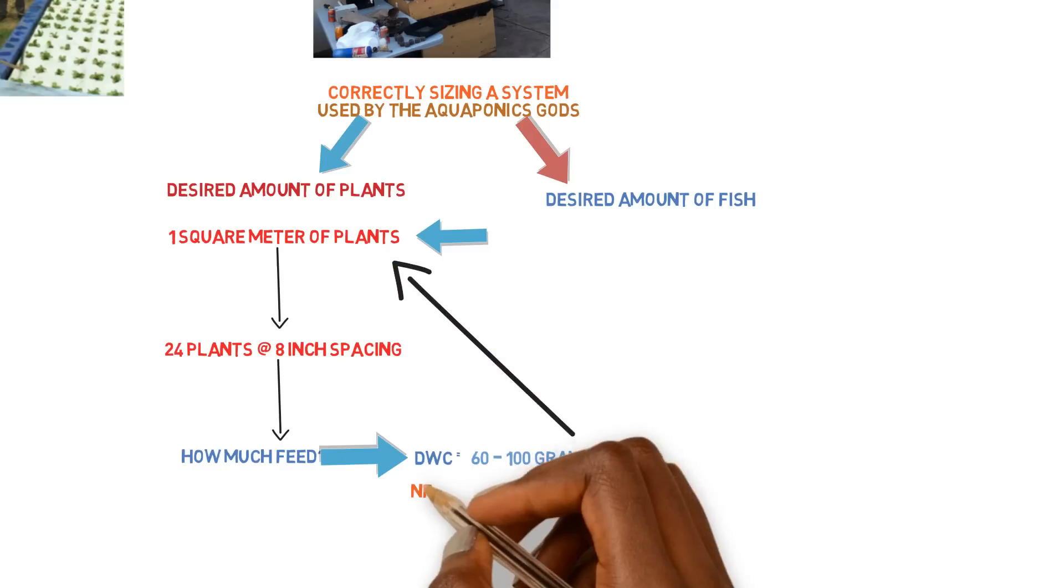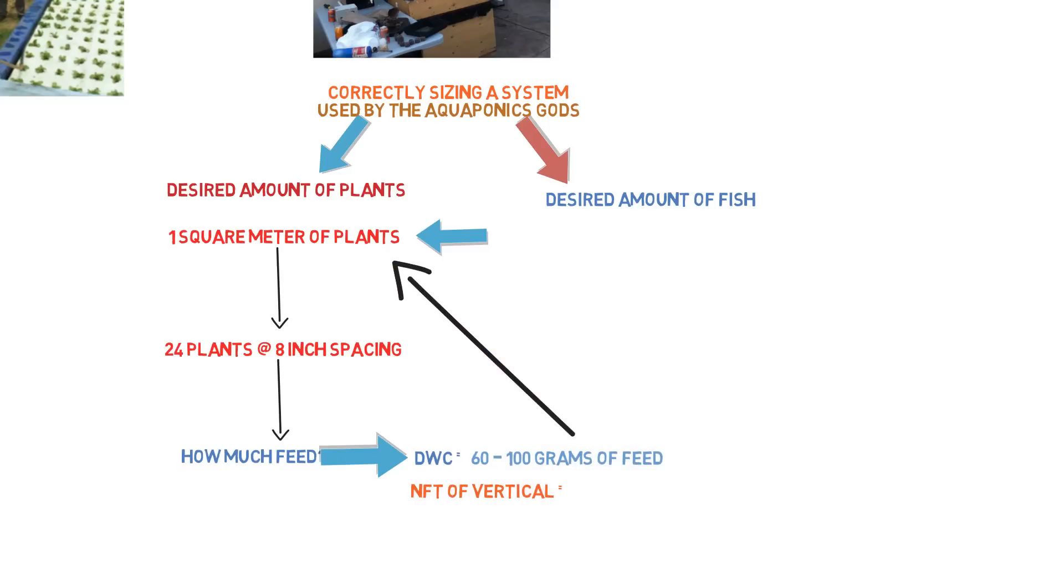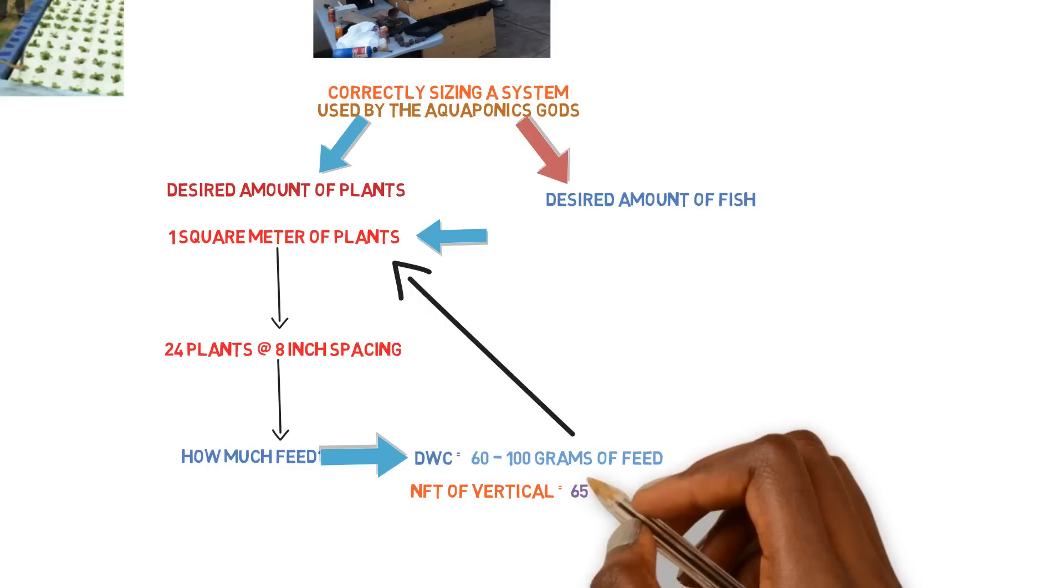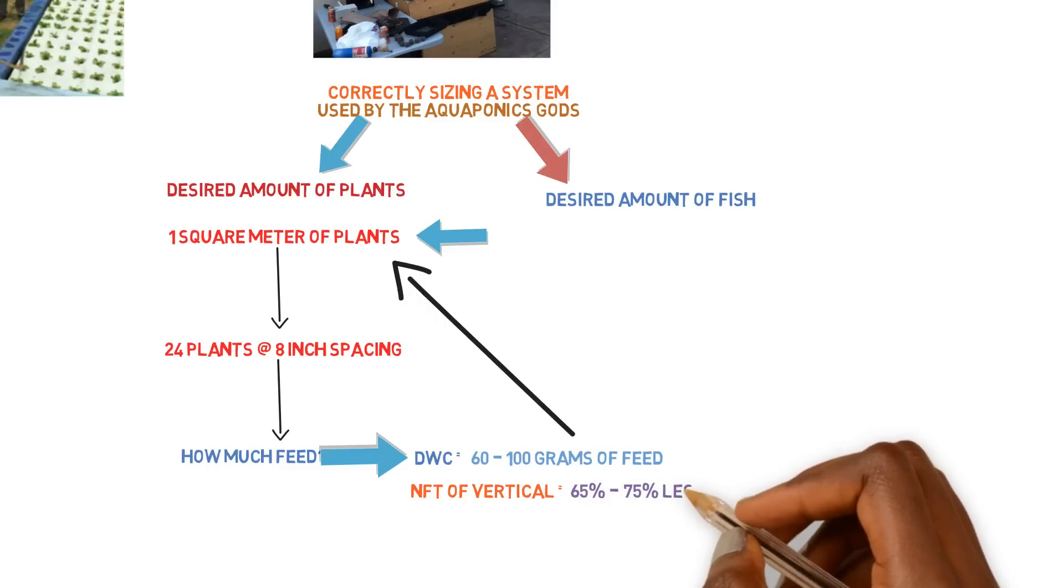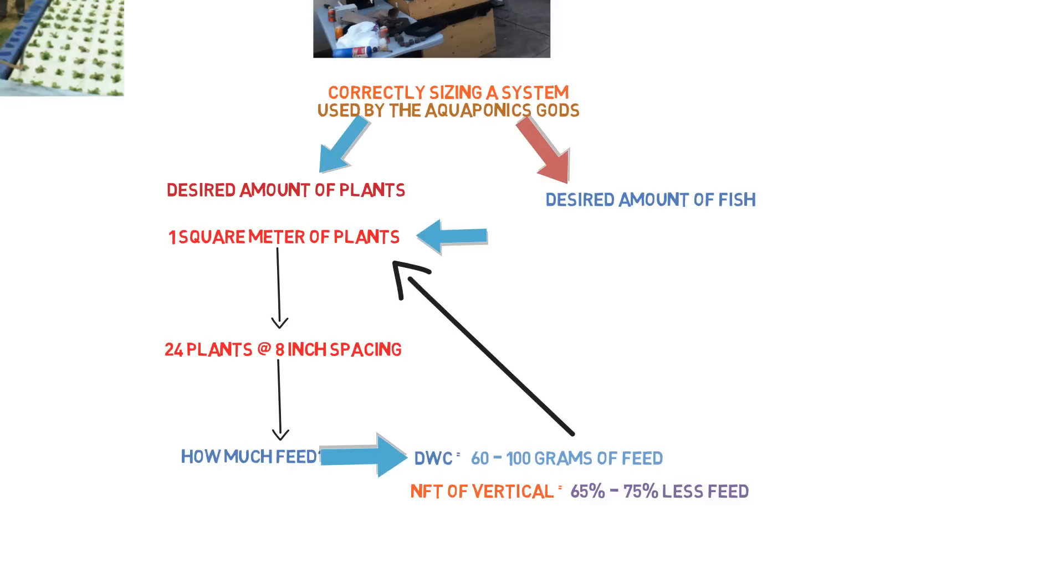And if you're using an NFT system or a vertical system, something that doesn't house a lot of water, then it's going to be about 75 percent less. Between 65 and 75 percent less is what we've tested here. So now we have our feed ratio set in place. Simple as that.